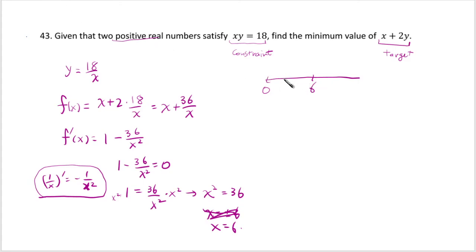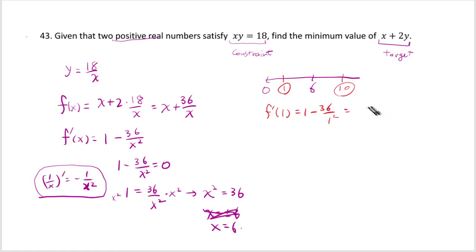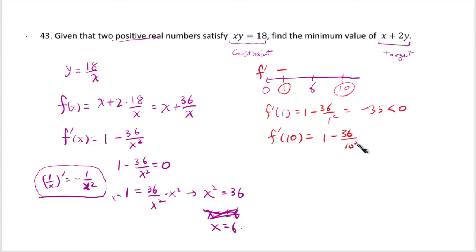Pick a test point before and after x = 6, so we choose 1 and 10. f'(1) = 1 − 36/1 = −35, so it's negative. The value isn't important; what's important is that f' is negative here. f'(10) = 1 − 36/100 = 0.64, which is positive.